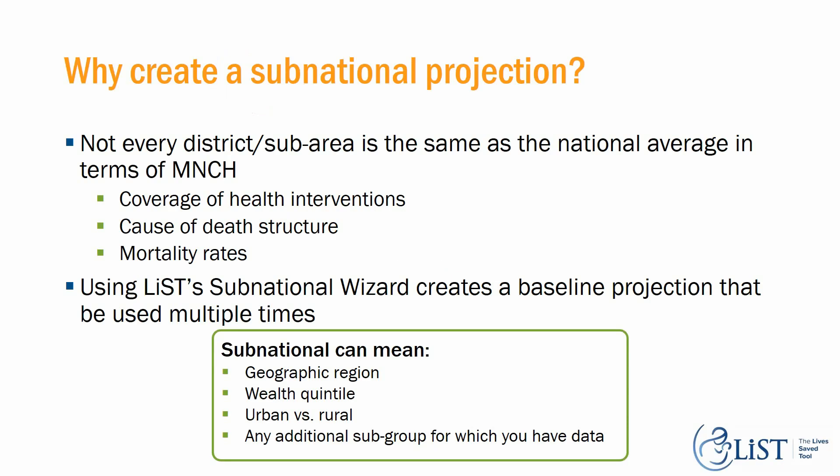So why create a subnational projection? Not every district, region, or sub-area is the same as the national average in terms of maternal, newborn, and child health. We know that coverage, cause of death structure, and mortality rates can quite drastically vary from the national average depending on the region.